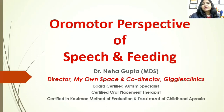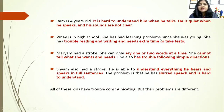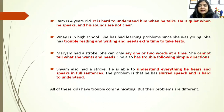Hello everyone. I'm starting with the oromotor perspectives of speech and feeling. Before I proceed, I'm presenting here four examples. As you can see on the screen, there are four people we are talking about. I would like to understand before moving that we are very clear with the speech and the language part. If any one of you can just tell me which one you think has a speech problem.